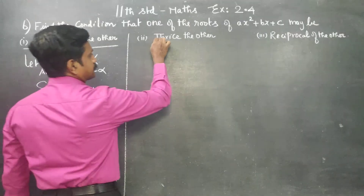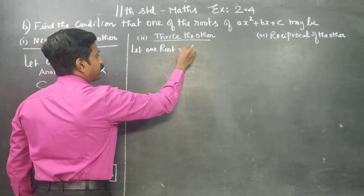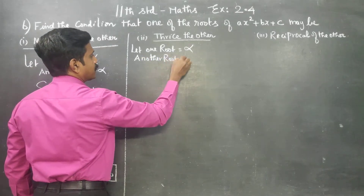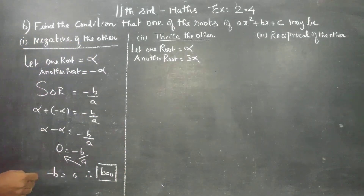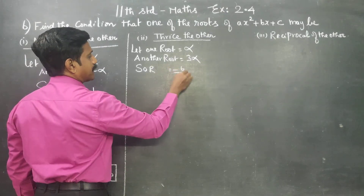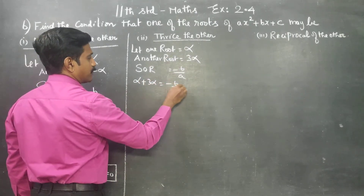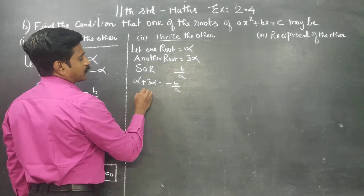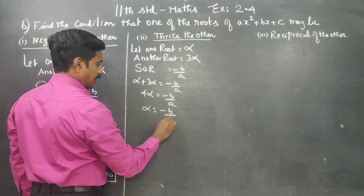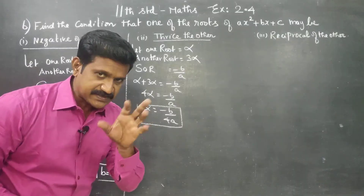Item 2: Let one root be alpha and thrice the other, therefore another root is 3 alpha. First, I am going to find the sum of the roots. The sum of the roots formula is minus b by a. So alpha plus 3 alpha is equal to minus b by a, giving 4 alpha equal to minus b by a.